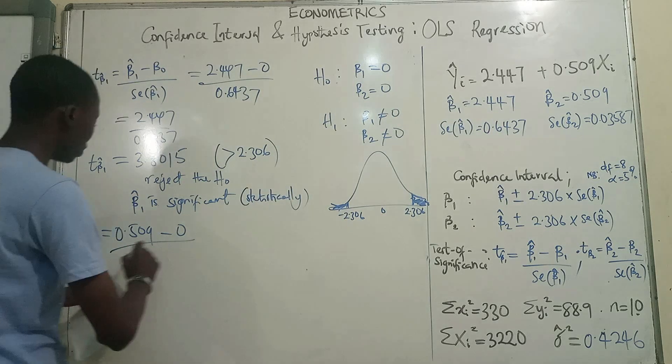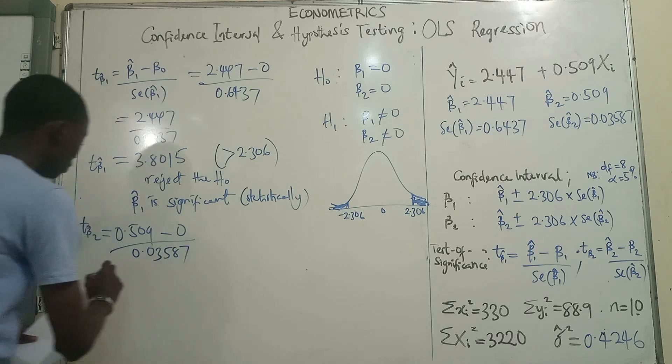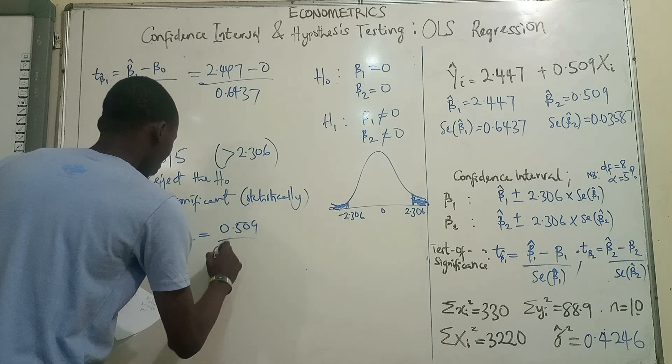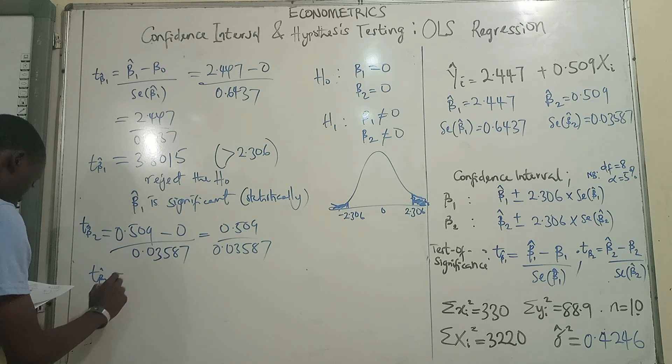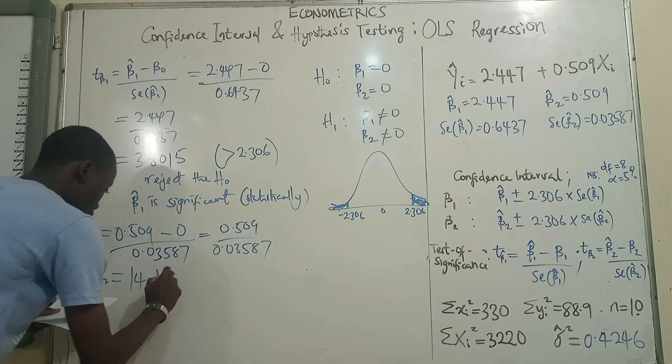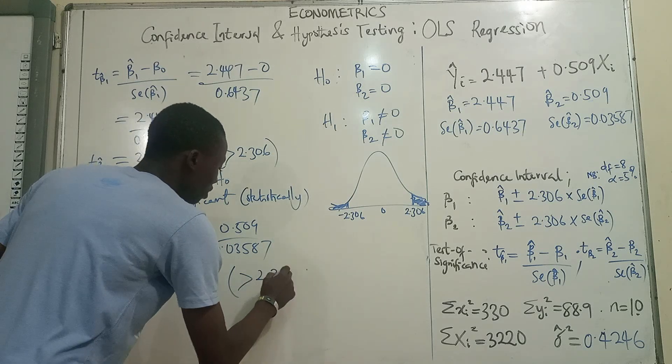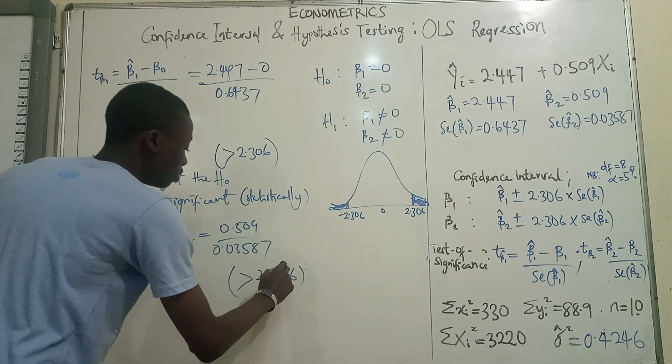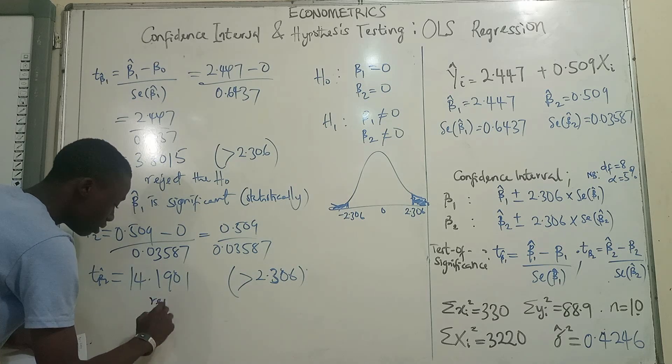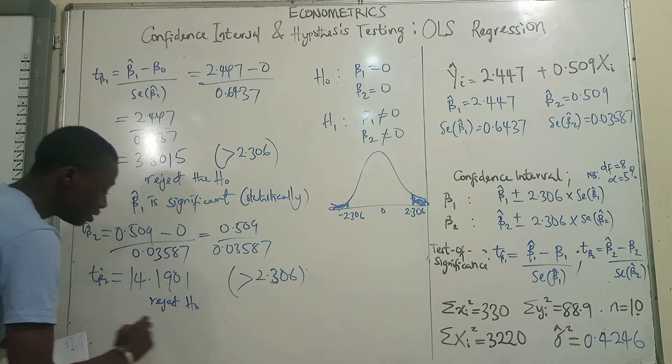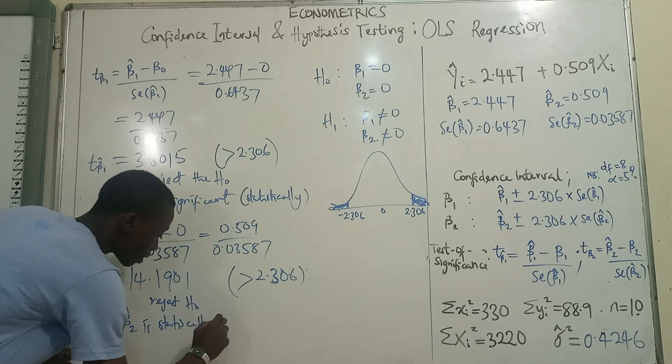This is divided by the standard error of beta 2. The standard error of beta 2 is 0.03587. So 0.509 divided by 0.03587. The T statistics for beta 2 will be 14.19012. So we see again that this is also greater than this.